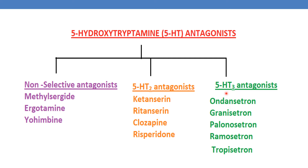5-HT3 antagonists are ondansetron, granisetron, palonosetron, ramosetron, and tropisetron. These are some of the non-selective and selective 5-HT antagonists.